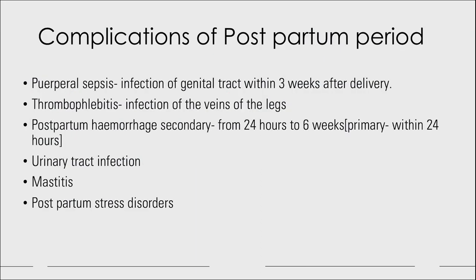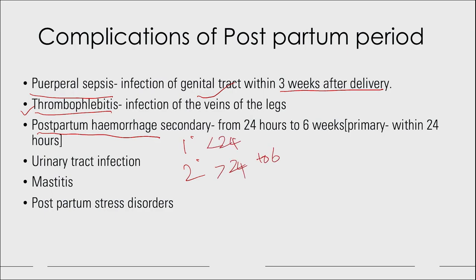What are the complications of the postpartum period? Puerperal sepsis is infection of the genital tract within 3 weeks after delivery. Thrombophlebitis is infection of the veins of the legs, for which mobilization prevents its occurrence. Postpartum haemorrhage can be divided into primary — within 24 hours — and secondary, which is more than 24 hours up to 6 weeks. The most common cause of primary PPH is bleeding, and of secondary PPH is infection.